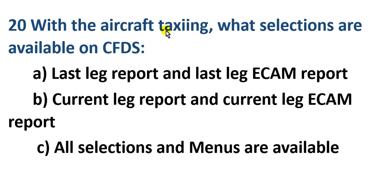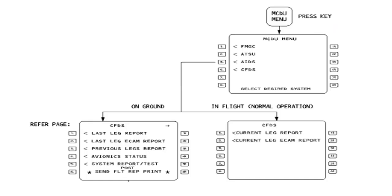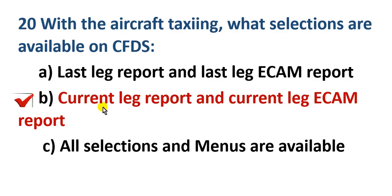Looking at the ground and flight modes: taxiing means the aircraft is in flight phase, so the correct answer is the current selections - current ACARS reports and current CFDS reports. Taxiing equals in-flight mode, so the correct answer is current and current ACARS reports.